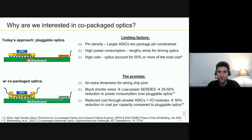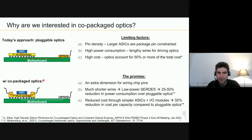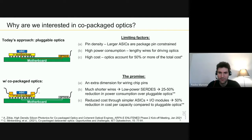The second problem is power consumption: we keep adding more lines, and these lengthy wires consume high energy to reach the optics. We are at the point where almost 50% of the switch cost comes from the optics. With the co-packaged optics approach, the promise is we can have an extra dimension for wiring the chip pins — we can have the laser at the edge of the first-level package with much shorter wires, which reduces power consumption by 25 to 50%, and can also reduce cost by up to 50%.